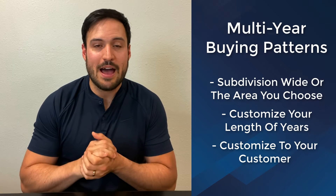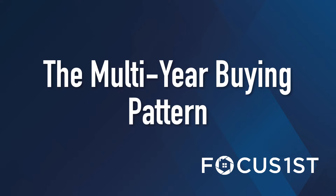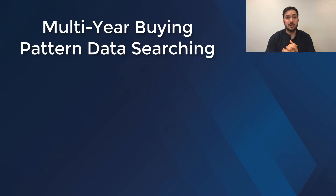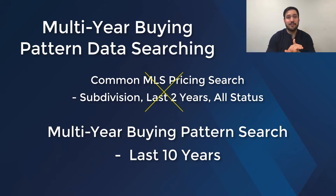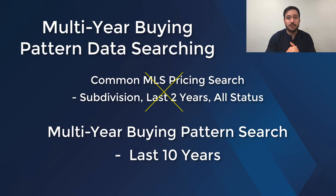So let's go step by step on how to create that graph and what it ends up looking like. The first thing we have to talk about when it comes to creating the multi-year buying pattern — which is essentially a neighborhood appreciation chart — is the difference in searching. When it comes to pricing, we usually search for a neighborhood for the last two years of all status data. In the multi-year buying pattern, we need to actually look for the last 10 years because we want to find a good length of appreciation charts. There might be cases where you go further — if the customer you're doing this for has owned the home for 15 or 20 years, you want to make sure you go back at least as far as when they purchased it.